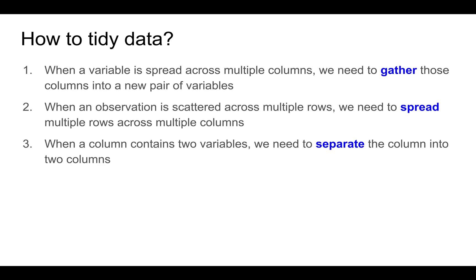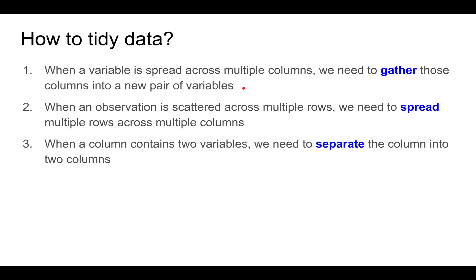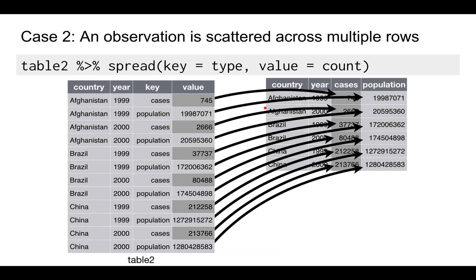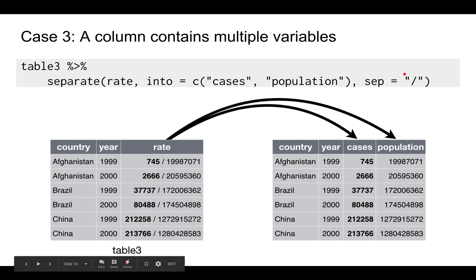So how do you tidy data? If a variable is spread across multiple columns, you need to gather those columns into a new pair of variables — you need to use the gather function. If an observation is scattered across multiple rows, you need to spread those rows across multiple columns. And finally, if a column contains two variables, you need to separate that column into two different columns.